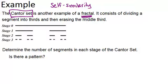So here it says the Cantor set is another example of a fractal. It consists of dividing a segment into thirds and then erasing the middle third. So we start out in stage 0 with just one line. In stage 1, we've divided that line into thirds and erased the middle third.